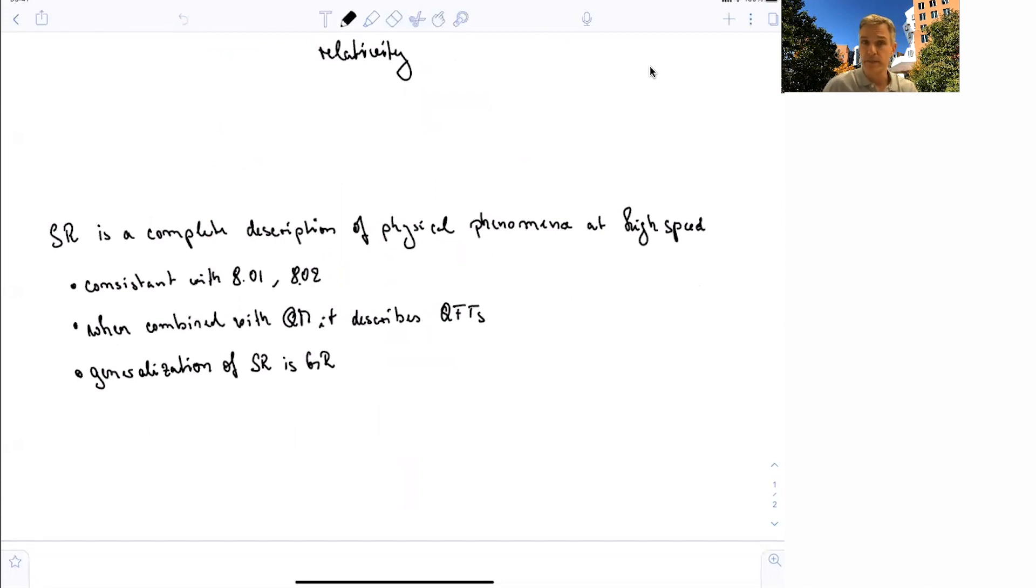So in summary, special relativity is a complete description of physical phenomena at high speed. It is consistent with 801 and 802. And you will later see that whenever you find equations of motion for objects at high speed, if we use smaller velocities, we will find the solutions of 801 and 802.